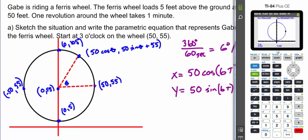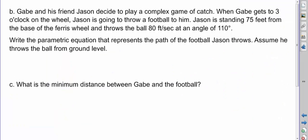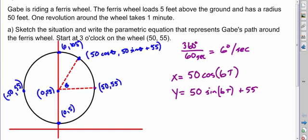So this is good. We have a Ferris wheel. You can trace it. You can move around and see the pathway that Gabe is taking. And now for the complicating factor. Gabe and his buddy Jason decide that just riding the Ferris wheel is just not enough for them. They have to make things more complex. So what they do is decide that when Gabe gets to the 3 o'clock, what we consider the starting point of the ride, Jason is going to throw a football to him. Jason's standing 75 feet from the base of the Ferris wheel. He's over kind of to the right. We'll add him to our diagram. And he throws the ball 80 feet per second at an angle of 110 degrees.